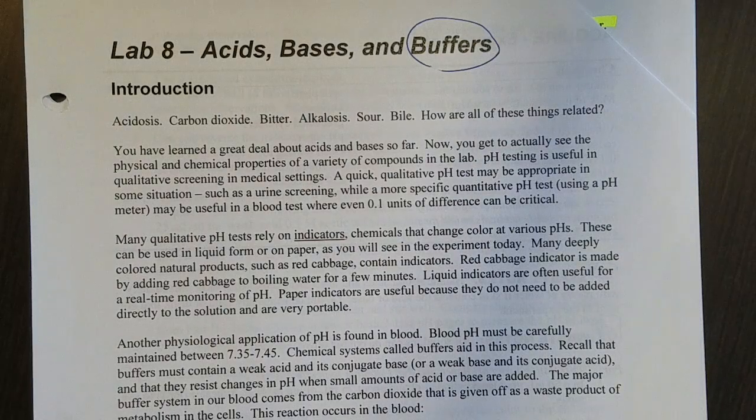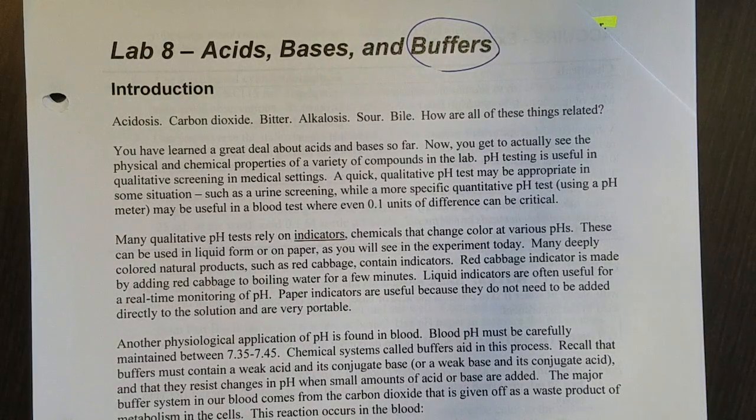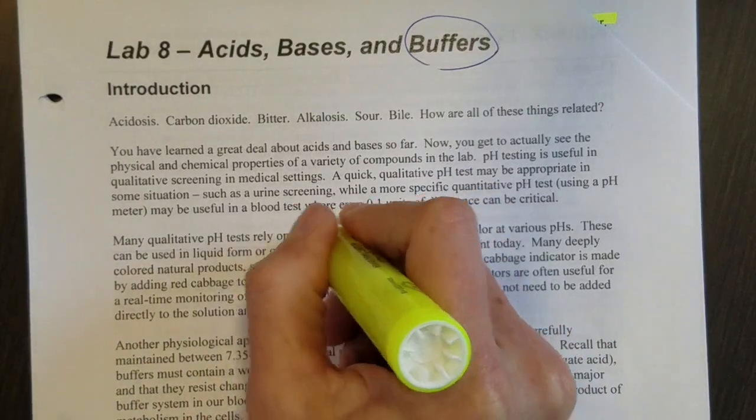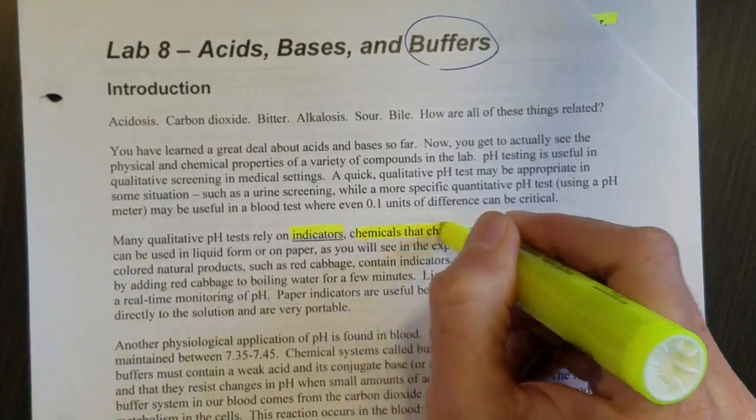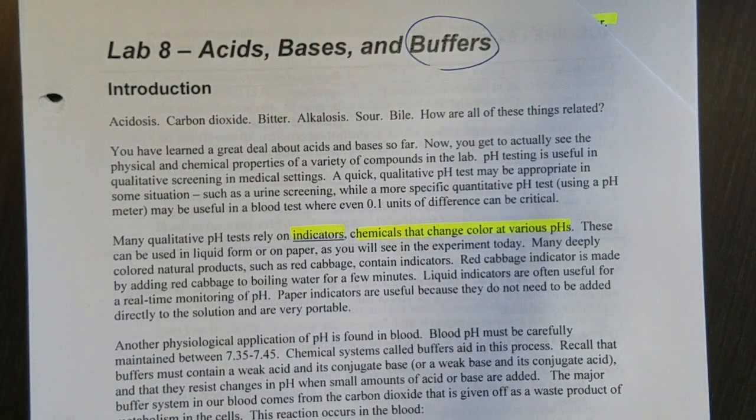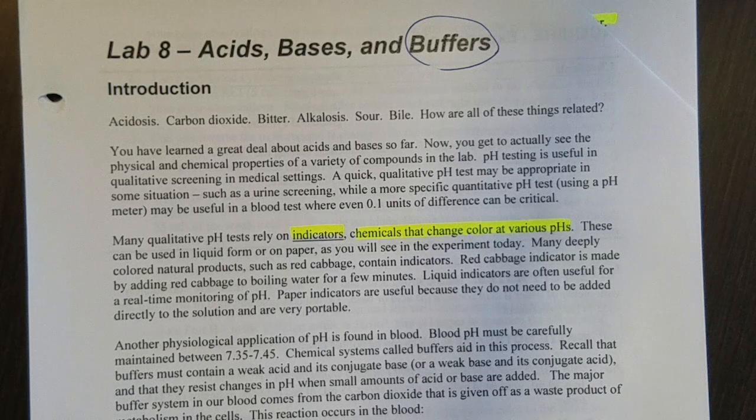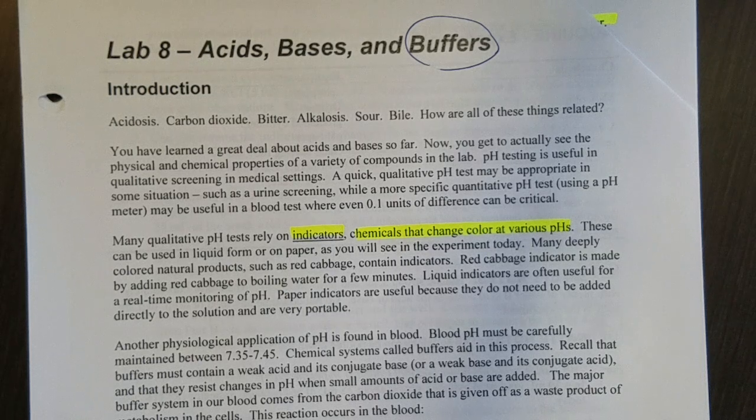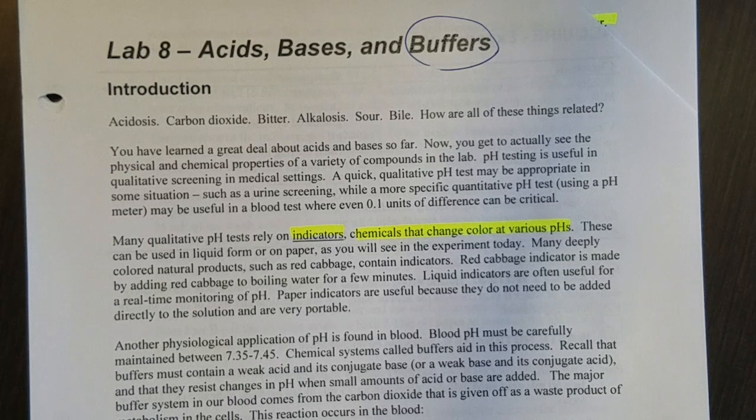but I hope it'll help you understand especially buffers. So a couple of things in the background here that I want to draw your attention to. We will be using in this experiment indicators and those are chemicals that change colors at various pHs. We'll be using red cabbage indicator, which you get by just boiling cabbage, and then there's also a variety of indicators in the pH paper. That's just a little bit less messy than having a liquid indicator.